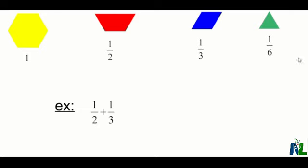And one green triangle is one sixth, because if you had six of them, it would equal one whole.